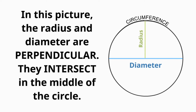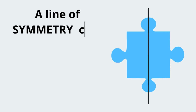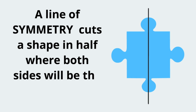Symmetry, meaning exactly similar parts facing each other or around an axis. Sym, meaning together or with, plus metry, meaning a unit of measure, make symmetry. A line of symmetry cuts a shape in half where both sides will be the same if folded.